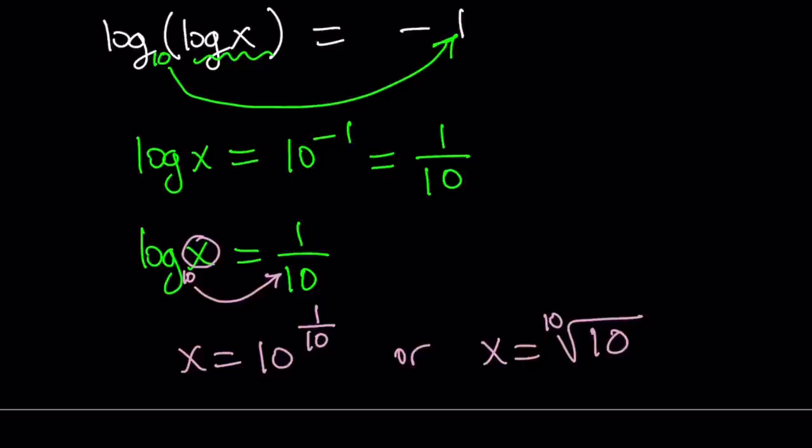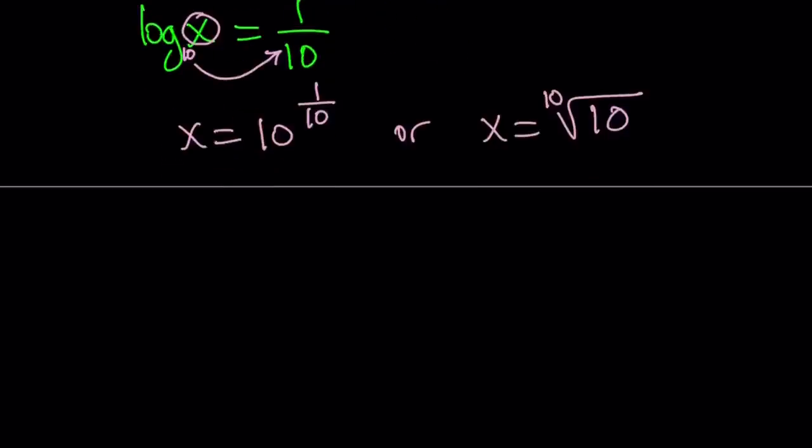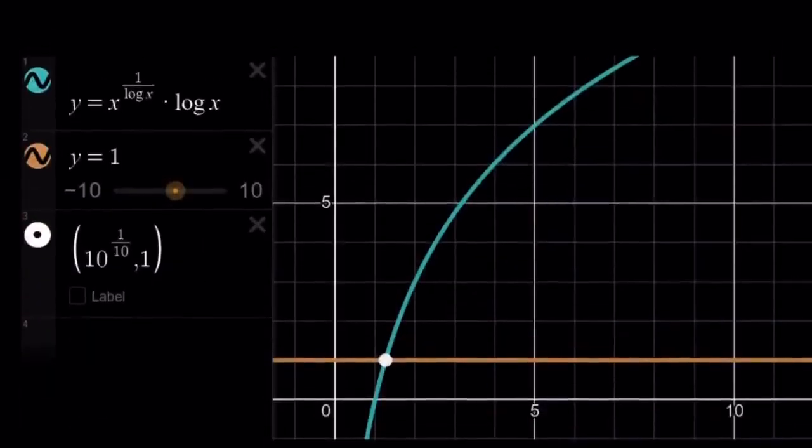Okay, now let's go ahead and take a look at the graph and see what this graph looks like. So I graphed this for you, the whole thing: y equals x to the power 1 over log x multiplied by log x. And notice that it's the same thing as log x. The graph of log x. Why? Because this is a constant, right? So we're basically looking at the graph of log x. And it intersects a horizontal line, which is y equals 1 at x equals 10 to the power 1 over 10.